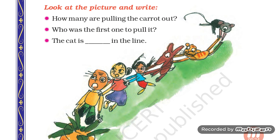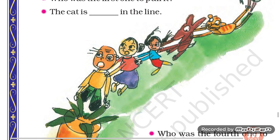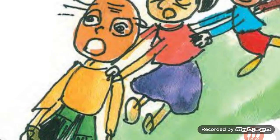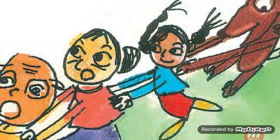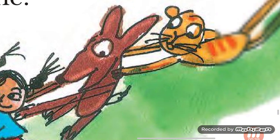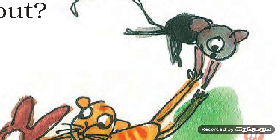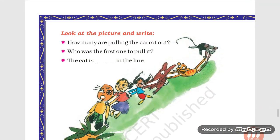Look at the picture and write. How many people are pulling the carrot out? Let's count: 1, 2, 3, 4, 5 and 6. So, the answer is 6 are pulling the carrot out.